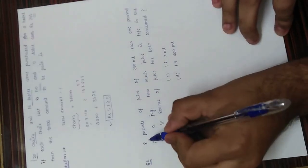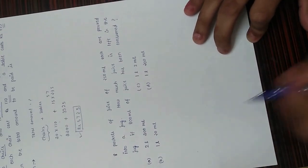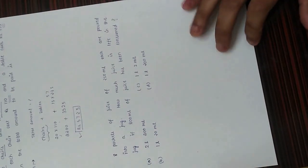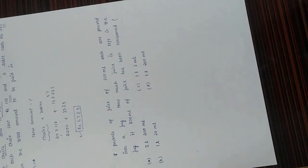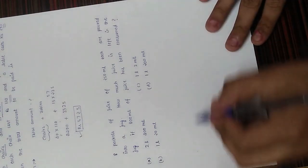The last question is for you to try on your own, and I will post the answer tomorrow. Read the question carefully: 8 packets of juice of 250 ml each are poured into a jug. How much juice is left in the jug if 800 ml of juice has been consumed?